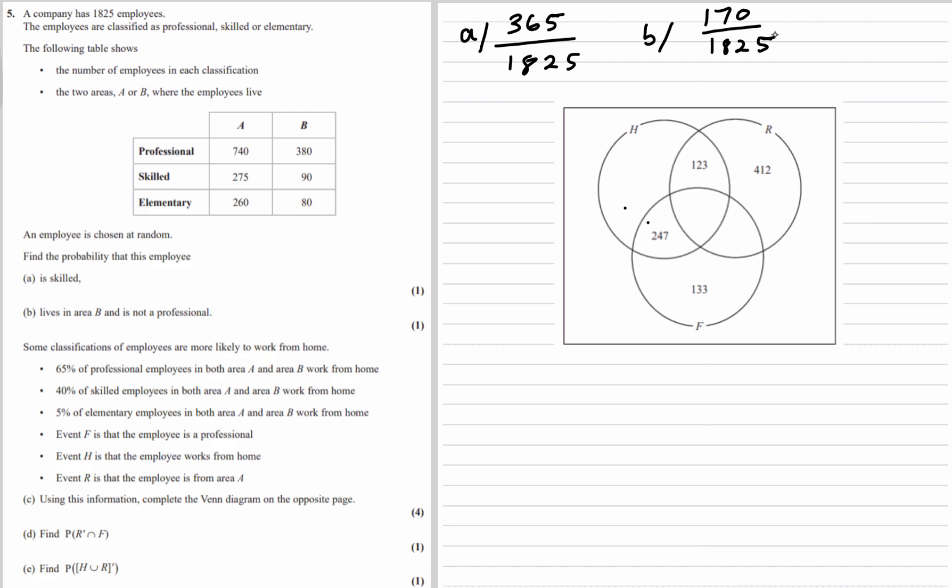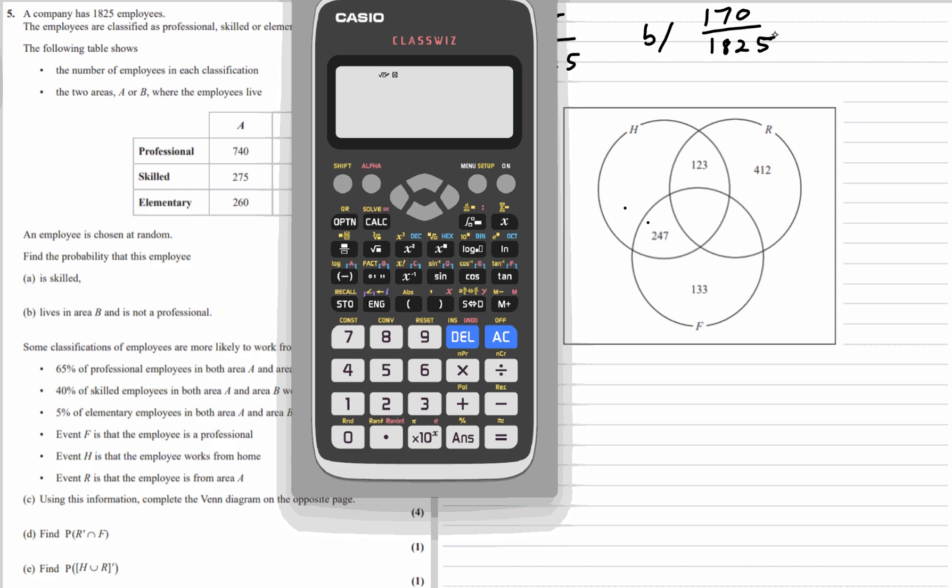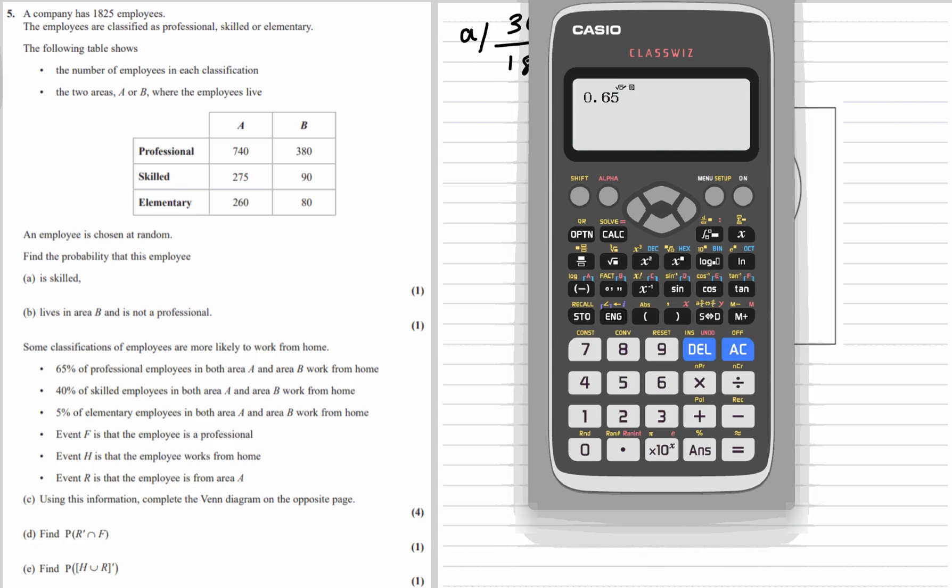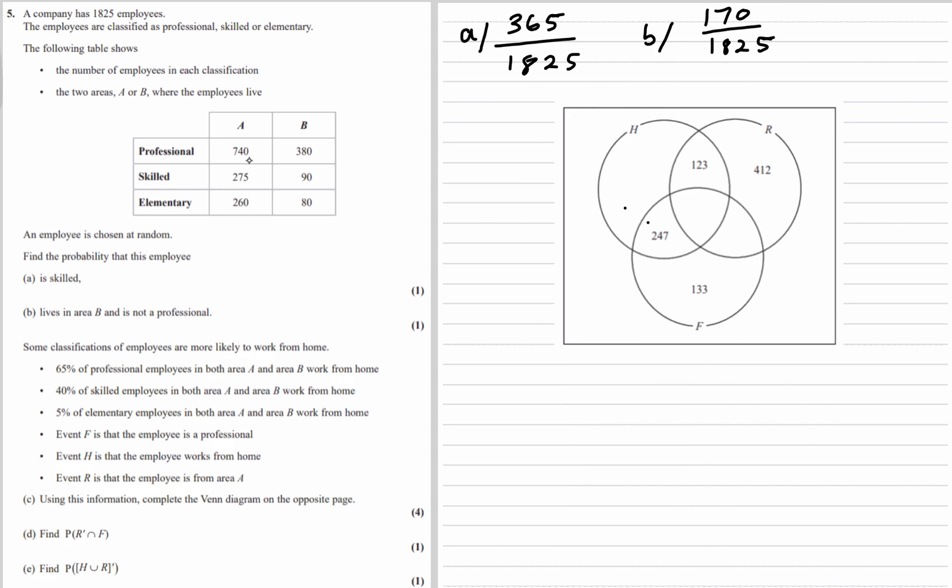Some classifications of employees are more likely to work from home than others. So 65% of professionals in both A and B work from home. So 65% of the 740, which is 481, 481 professionals in A work from home.